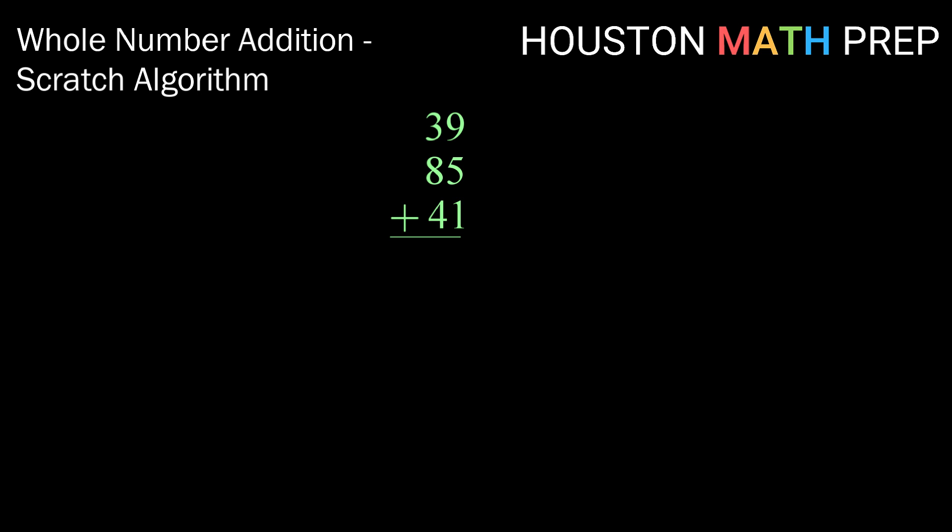Again, this is really similar to the standard algorithm except we're not gonna have to add 9, 5, and 1 all at the same time. What we're gonna do is add the top two numbers, or as many numbers as we need, until we make 10. So here, starting with 9 plus 5, that makes 14.